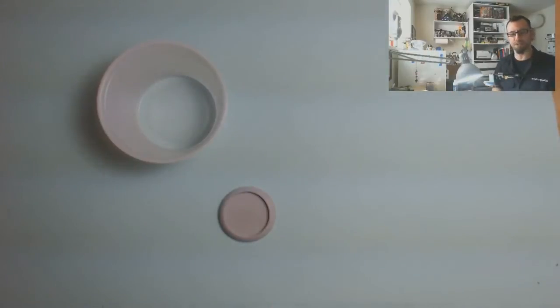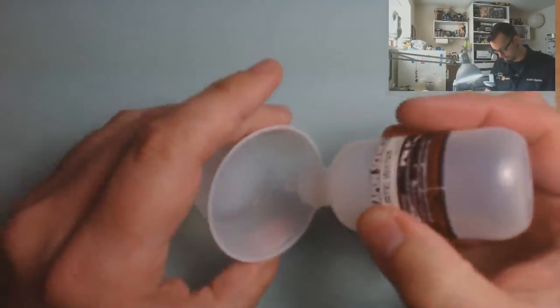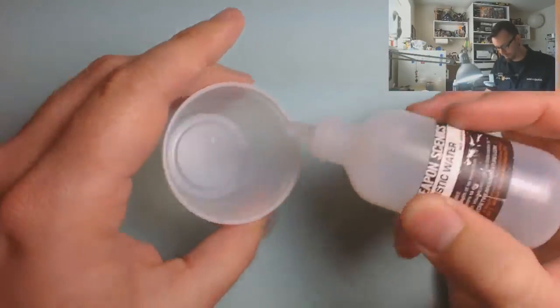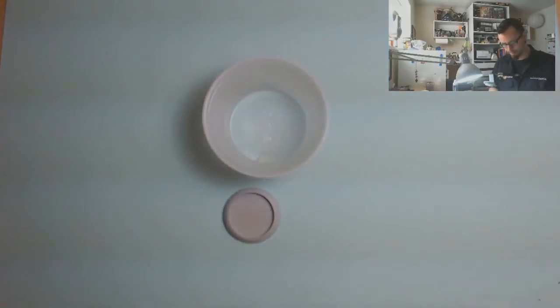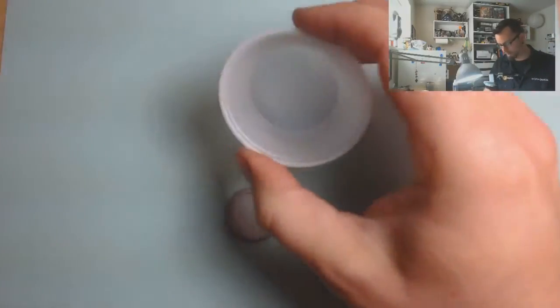Now you can do this with Realistic Water or with Gloss Varnish. I do have my Vallejo Gloss Varnish here as well, but I tend to like the Realistic Water. I find it more flexible. It doesn't shrink quite as much when it's done, better durability in my opinion.